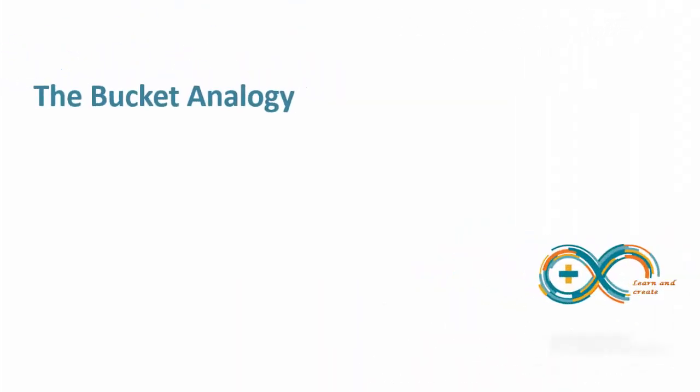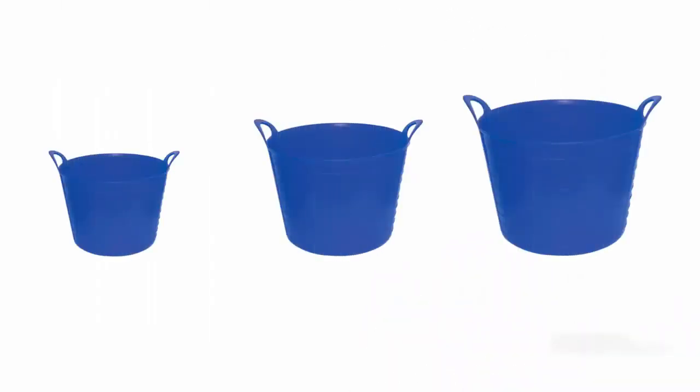Bucket analogy is used to make it easy to remember the details about L values and R values. Suppose you have a bunch of different sized buckets lying around. Each bucket is just big enough to hold a specific number of bytes of data. Some buckets can only hold one byte of data, whereas others can hold two bytes, still others can hold four bytes, and so on.